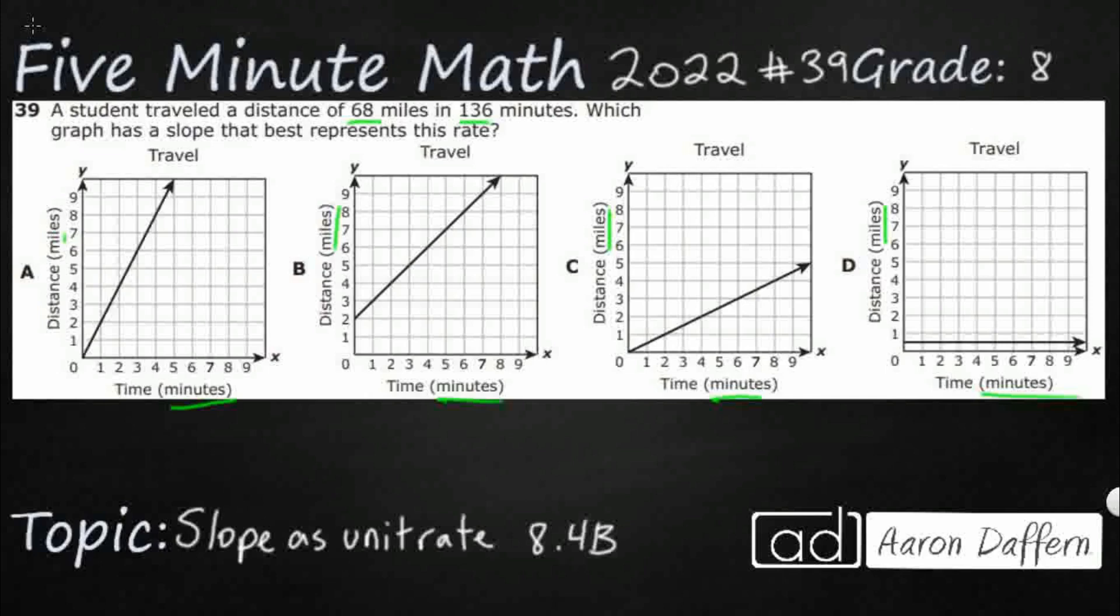We simply need to find the unit rate. We have 68 miles in 136 minutes. If we were to get it down to a unit rate, how many miles or how many minutes does it take for one mile?